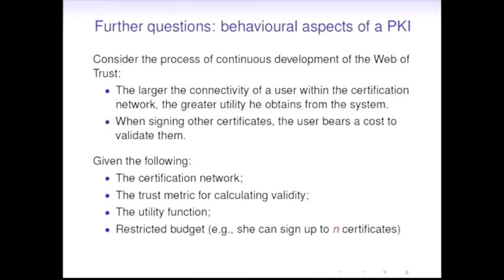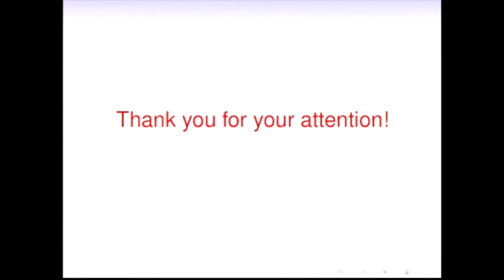Given the following: we have the structure of the certification network, the specific trust metric used by all users, the utility function of the user - for instance, the amount of users that will be able to validate his certificate once he's in that PKI - and he has a restricted budget so he can sign up to n certificates. Which certificates should he really sign to maximize that? It actually resembles the problem of identifying the most influential vertices to somehow rank users as per their influence and then choose the subset which will maximize this utility. As Matthew said, this has some tricky complexity issues as well. That's another direction of research which hasn't been touched yet at all. That's all, thank you.